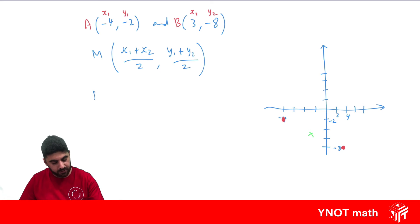Let's go ahead and sub them in. So x1 is minus 4 plus x2 is 3 all over 2, y1 is minus 2 plus y2, which is minus 8 over 2. Let's simplify. So minus 4 plus 3 gives us minus 1 over 2, and minus 2 plus minus 8, well, plus minus is going to change into a minus. So we've got minus 2 minus 8 is minus 10. Minus 10 divided by 2 is minus 5.